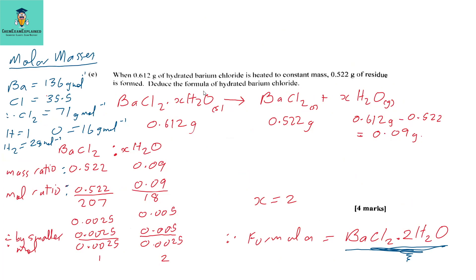Let's examine the question in detail. We have 0.612 grams of hydrated barium chloride, which means water is part of that salt. After heating, you drive off the water. What you're left with is the residue, and the mass of the residue is 0.522 grams. We can calculate the mass of water by subtracting the residue from the hydrated salt, giving a water value of 0.09 grams.